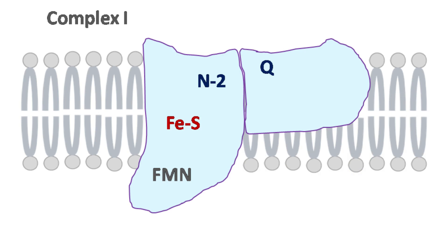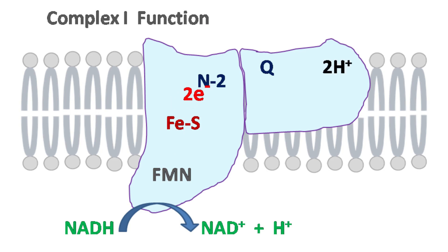Let's see how Complex I functions in the electron transport chain. Complex I oxidizes NADH to NAD+. The two electrons removed during this process are transferred to FMN, iron sulfur center Fe-S, iron sulfur protein N-2, and finally ubiquinone.